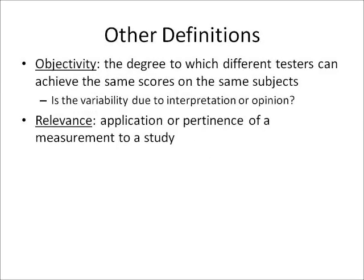Other definitions: objectivity is the degree to which different testers can achieve the same scores on the same subjects — is the variability due to interpretation or opinion? Relevance is the application or pertinence of a measurement to a study.